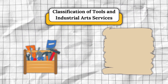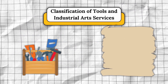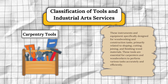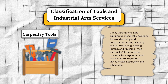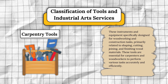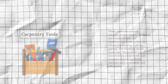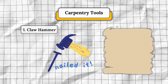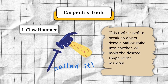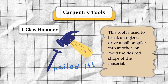Now for classification of tools in industrial art services. First, we have carpentry tools. These are instruments and equipment specifically designed for woodworking and construction tasks, primarily related to shaping, cutting, joining, and finishing materials. These tools are essential for carpenters and woodworkers to perform various tasks accurately and efficiently. Number one, claw hammer — used to break an object, drive a nail or spike into another, or mold the desired shape of the material.